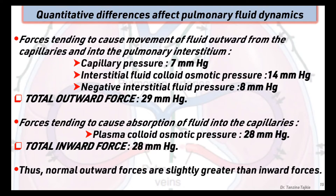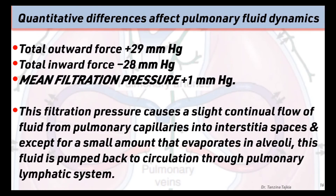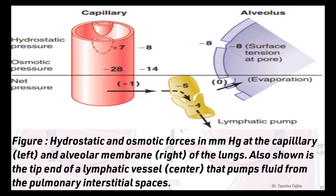The force tending to cause absorption of fluid into capillaries is the plasma colloid osmotic pressure, which is about 28 mmHg. So total inward force is about 28 mmHg. Thus normal outward forces are slightly greater than inward forces, giving a mean filtration pressure of about 1 mmHg. This causes a slight continual flow of fluid from pulmonary capillaries into interstitial space, and except for a small amount that evaporates in the alveoli, this fluid is pumped back into circulation through the pulmonary lymphatic system.